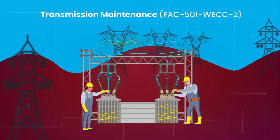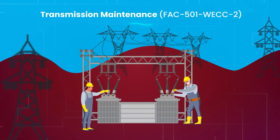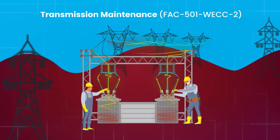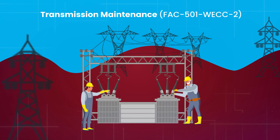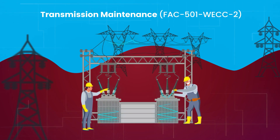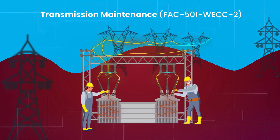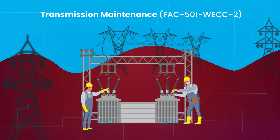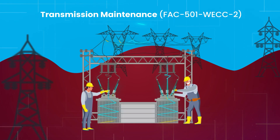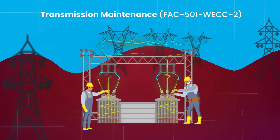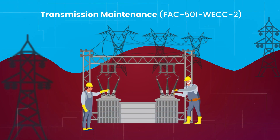Transmission maintenance, FAC-501W ECC2. This policy applies to Western Electricity Coordinating Council area entities and sets requirements for transmission facility maintenance, including inspections, repairs, and guidelines to prevent failures and ensure system reliability.